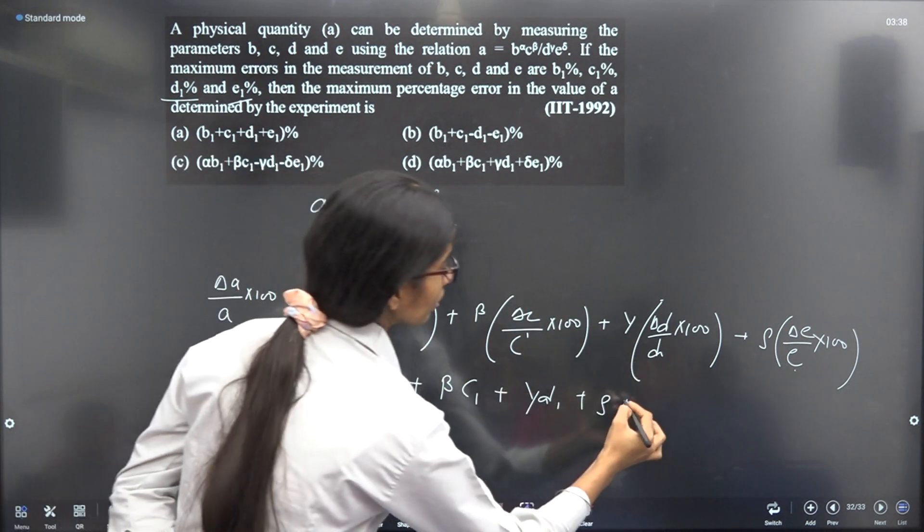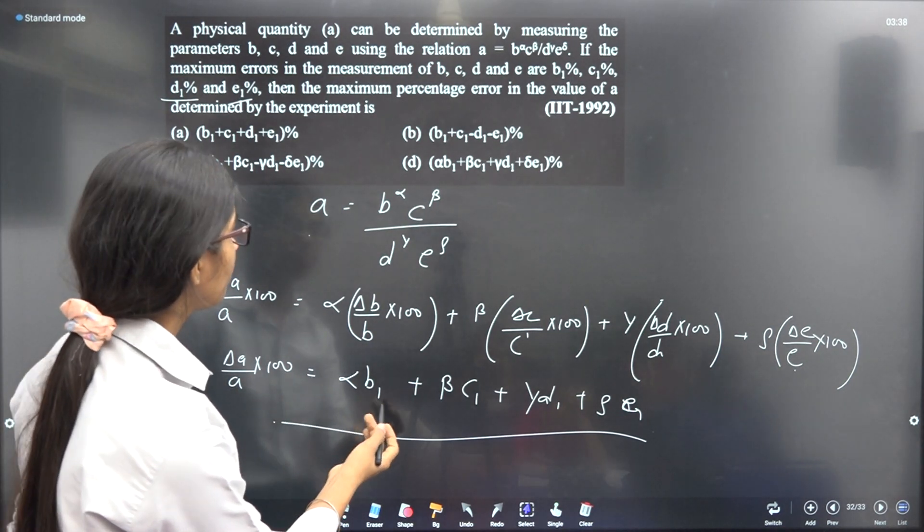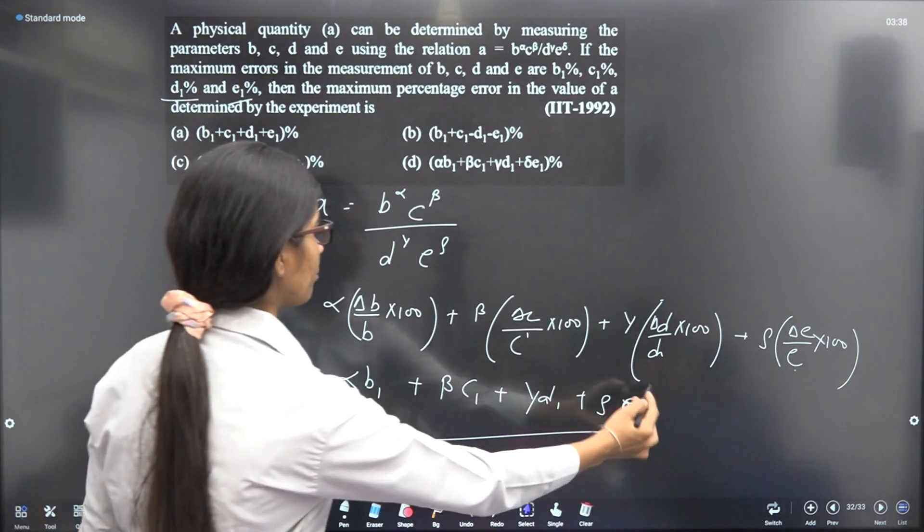The answer is αB1 + βC1 + γD1 + ρE1 percent.